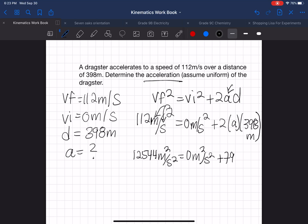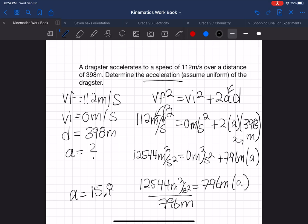And then we're going to continue: 12,544 meters squared over s squared equals 796 meters times a, and then divide this over, and a will equal 15.8 meters per second squared is your acceleration.